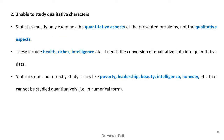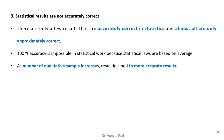The second limitation is inability to study qualitative characteristics. Statistics mostly examines quantitative aspects, not qualitative ones such as health, intelligence, or beauty — these are nominal variables. Conversion of qualitative data into quantitative data is required before analysis. Statistics does not directly study issues like poverty, leadership, or beauty that cannot be quantified. The third limitation is that statistical results are not perfectly accurate — almost all are only approximately correct, as statistical laws are based on averages.